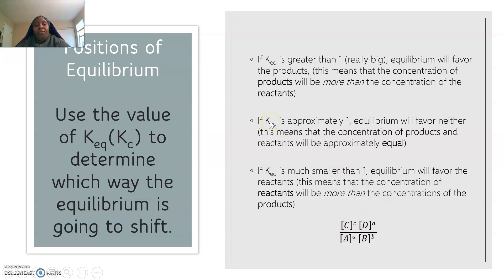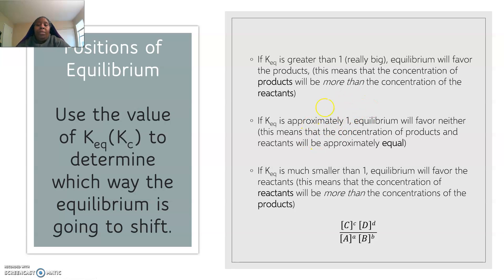For the second case, if the equilibrium constant is about 1, the equilibrium will favor neither the products nor the reactants. That basically means the concentration of products and reactants will be approximately equal. I say approximately because sometimes it'll be 1, sometimes it might be close to 2, could go as far as 2.3, and we would say the equilibrium favors neither one.